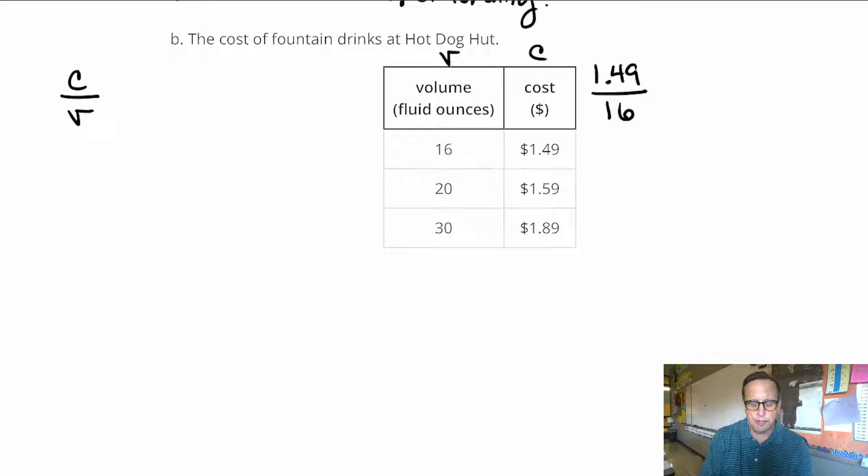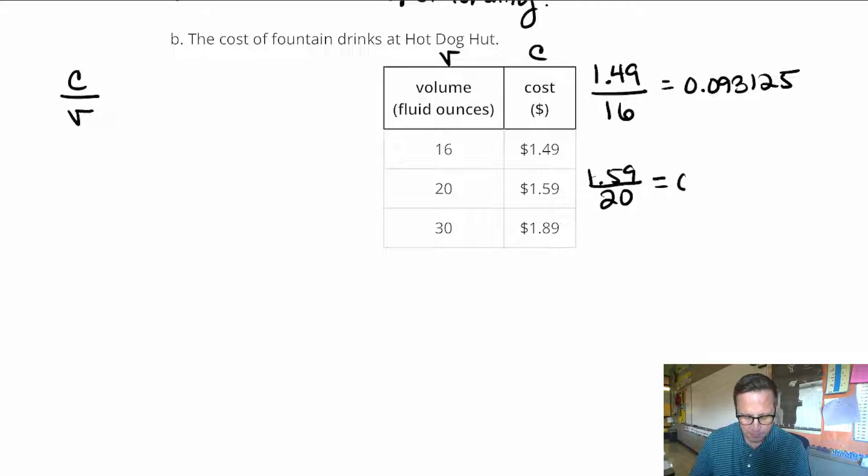So we're going to want to do $1.49 divided by 16. When you do $1.49 divided by 16, I get 0.093125. And I'm going to do that for the rest of them. I'm going to do $1.59 divided by 20, and that comes out to 0.0795. And I'm going to stop there.